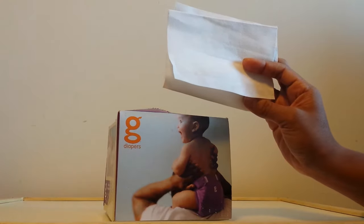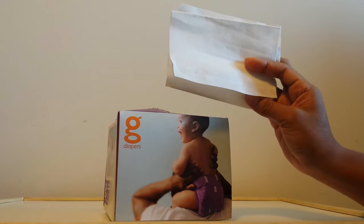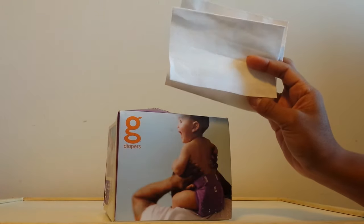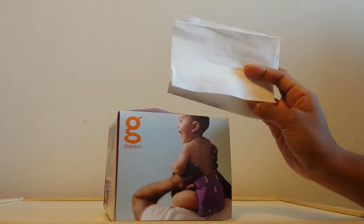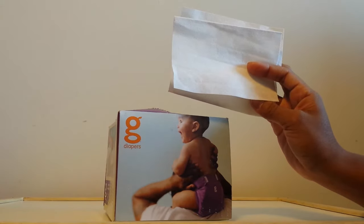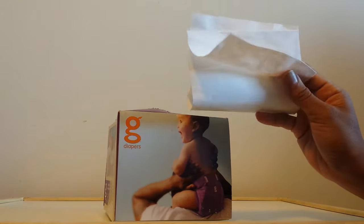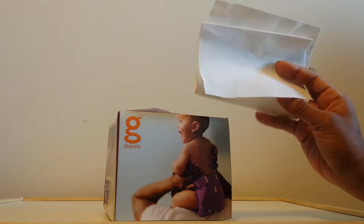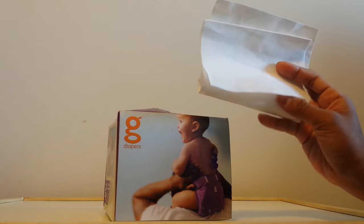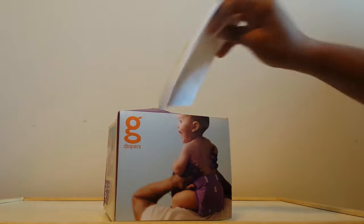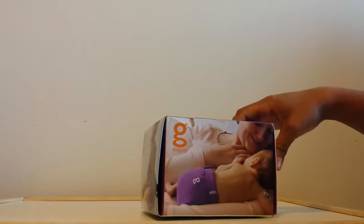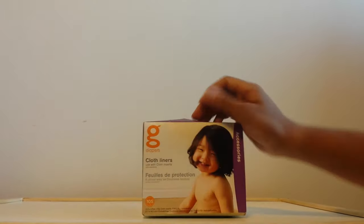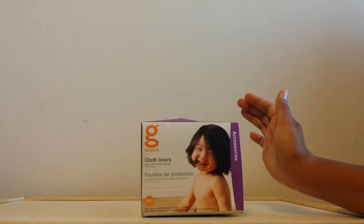It's also a great liner to use if you're going to be putting any cream on your baby or any lotion that you're worried will affect the absorbency of your gCloths. This is quite thick and provides that barrier protection against ruining your diapers. So that's just something for you to consider when you're thinking about cloth diapering, even if it isn't gDiapers.